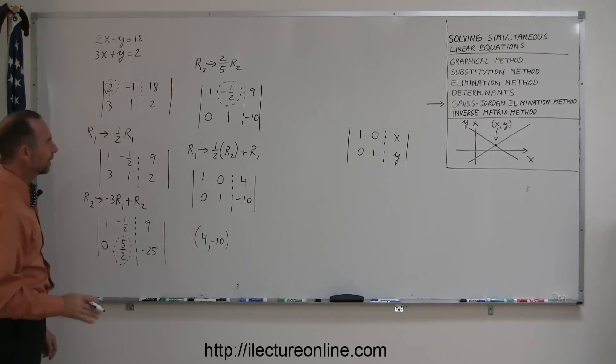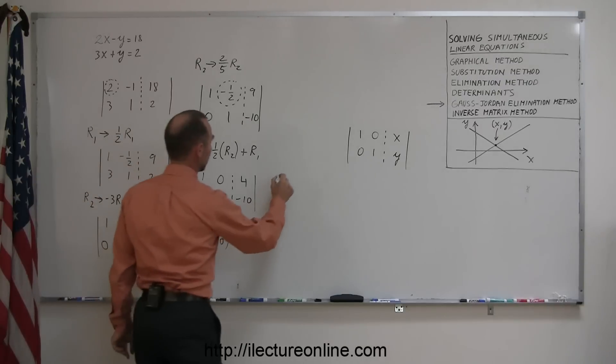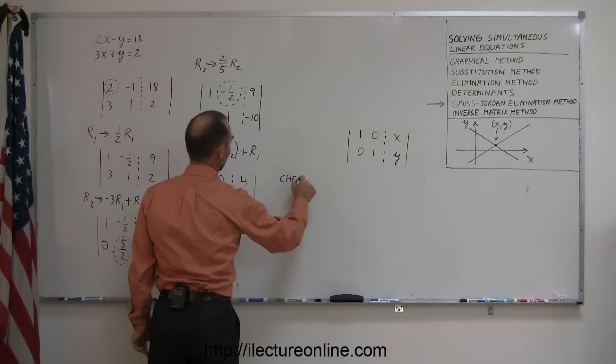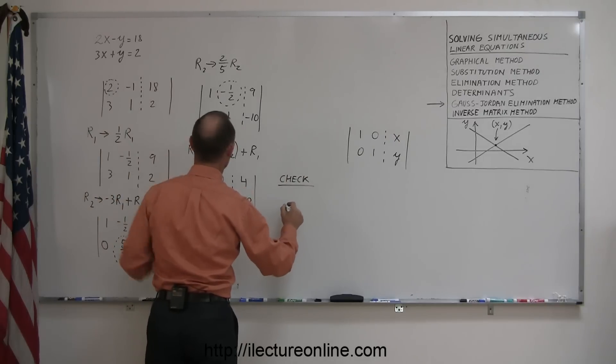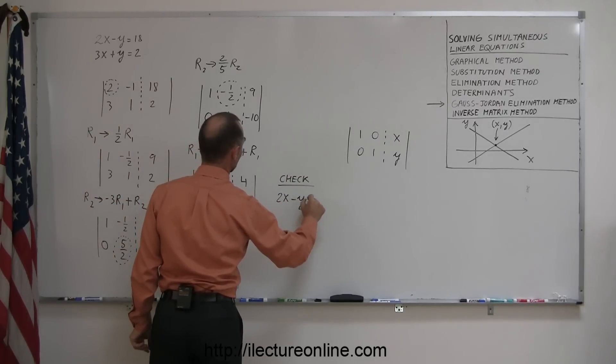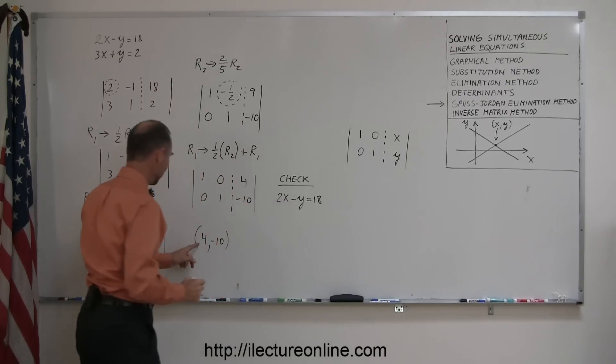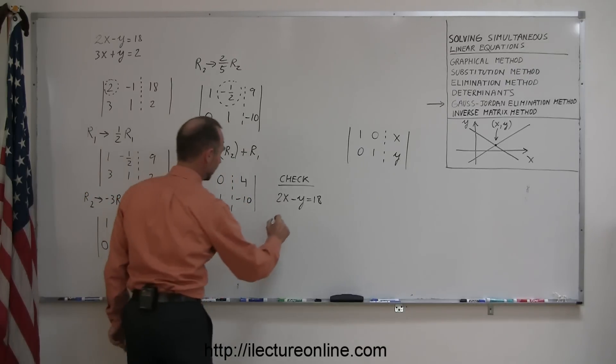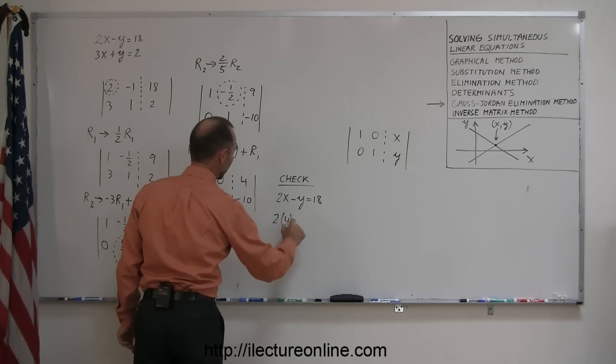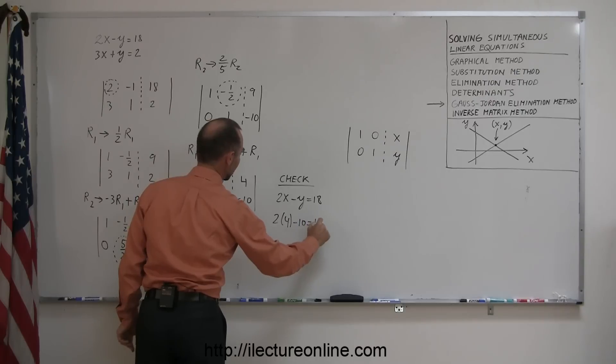And just to make sure we did this correctly, let's plug those numbers back in the two equations. So starting, we're going to check. And starting with the first equation, I have 2x minus y equals 18. Plugging in a 4 for x and a negative 10 for y. 2 times 4 minus 10 equals 18.